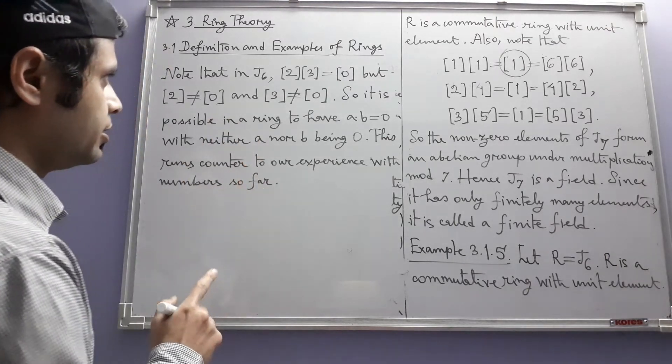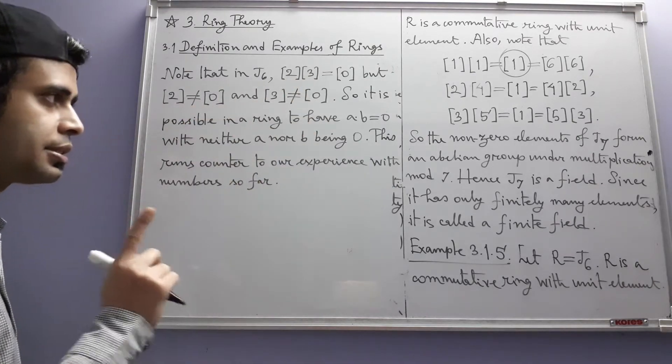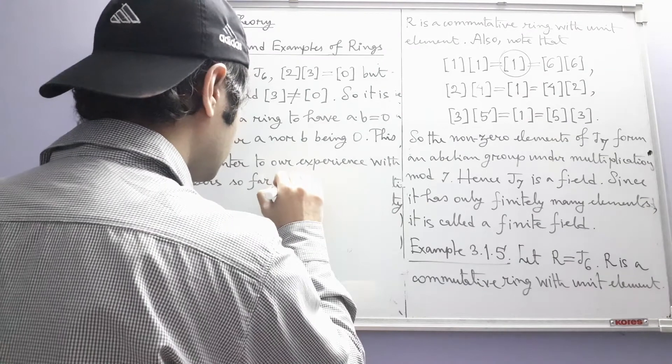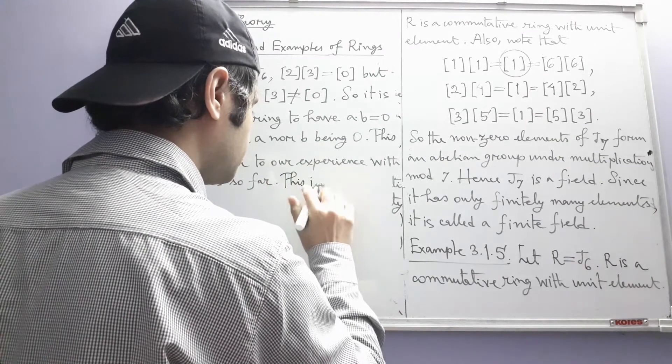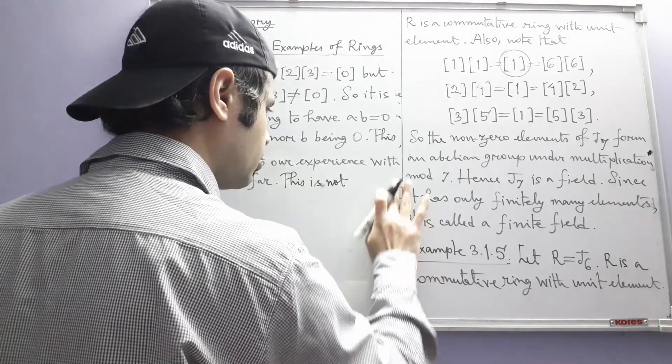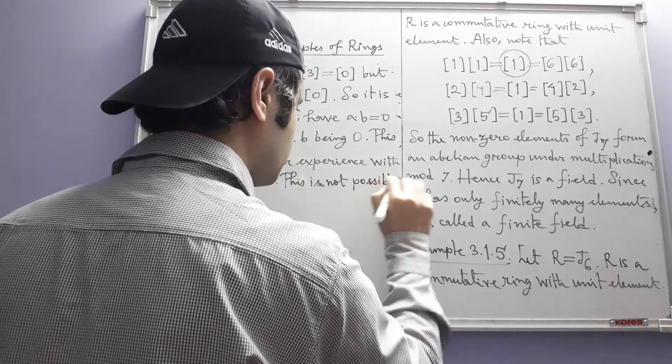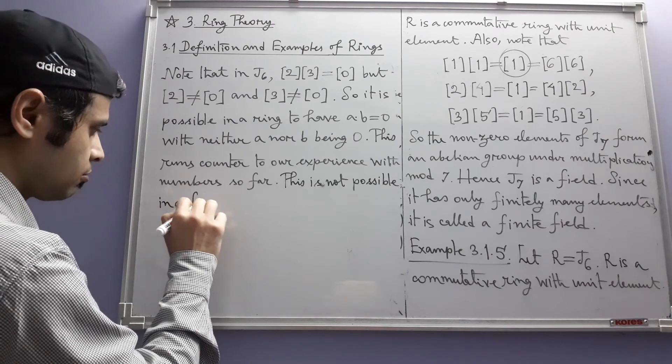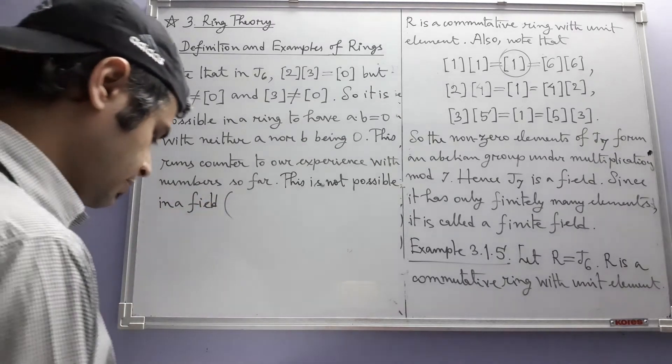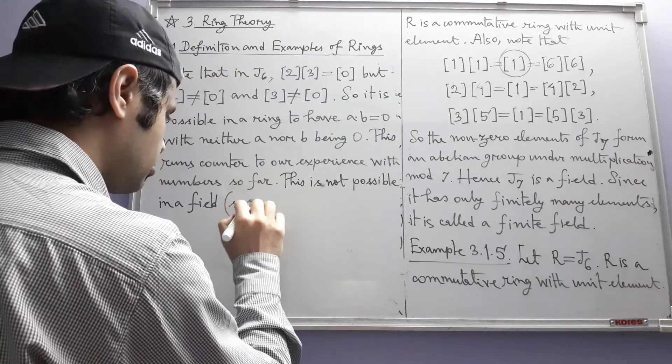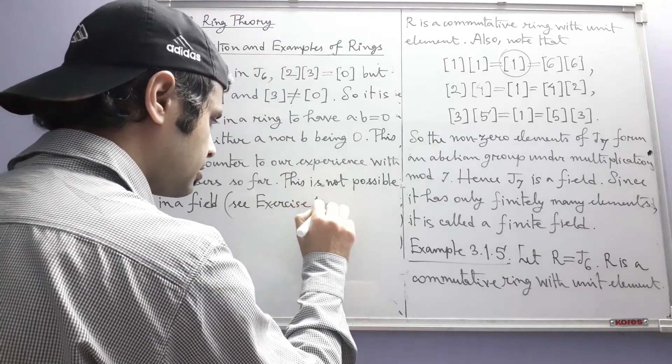And this particular thing that the product of two non-zero elements is zero, this cannot happen in a field. This is not possible in a field. Why? For that there is an exercise. See Exercise 10.